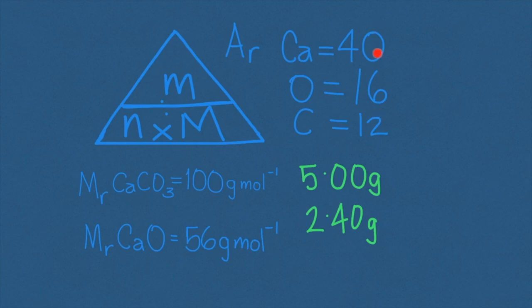Using these values from the periodic table, we determine that the relative formula mass of calcium carbonate is 100 grams per mole and the relative formula mass for calcium oxide is 56 grams per mole.